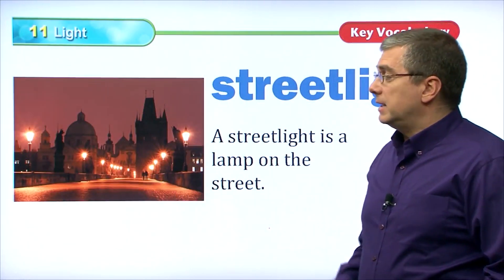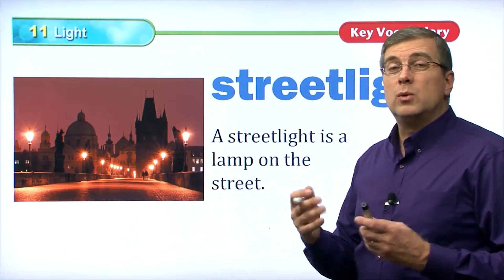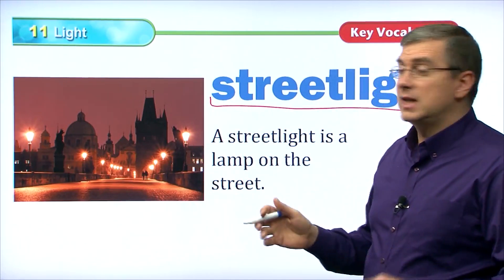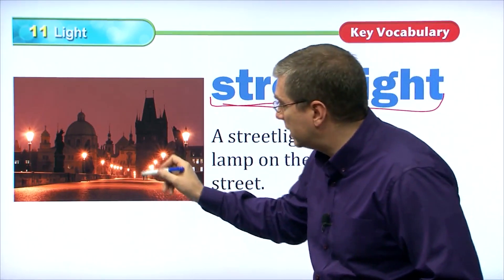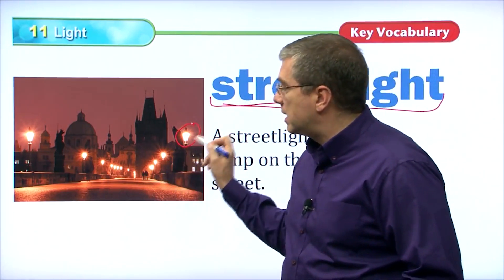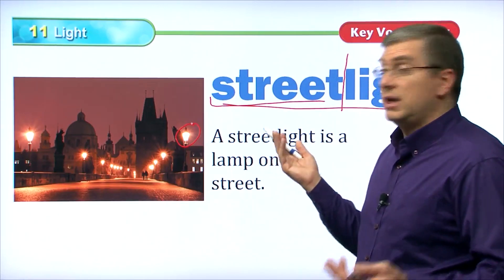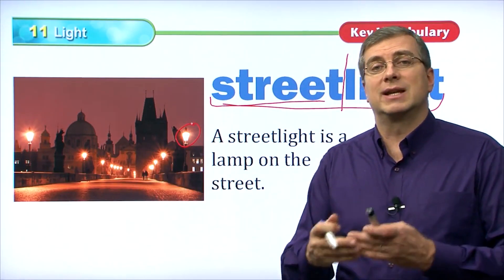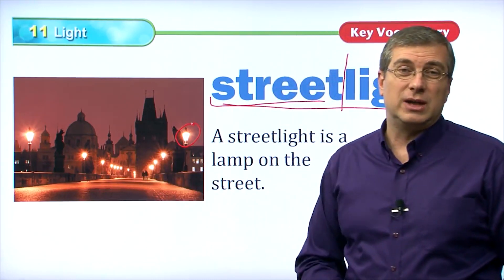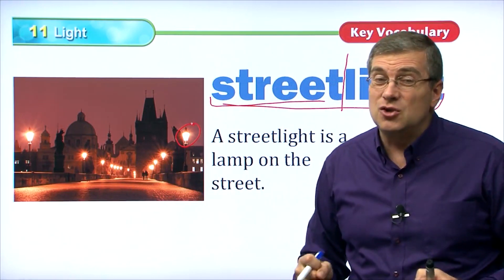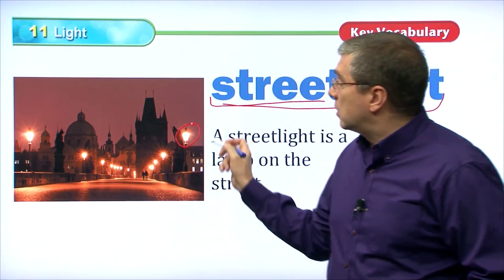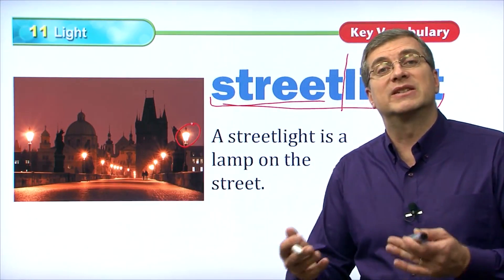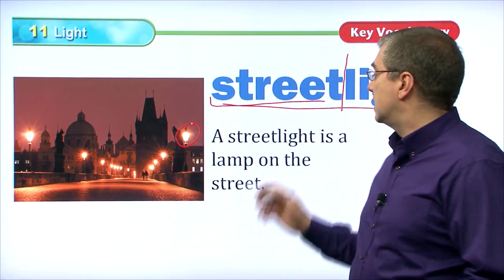At night, it's very dark. The sun is gone, there's no sun, so we need light to see by. Many cities will put street lights in their cities. Street light, of course, is two words — street and light. Street lights are lamps on the street. There are lamps on the street that allow us to see the city streets at night. It's dangerous to drive if you can't see and there's no light. So cities put lamps on the side of the streets so that drivers and people who are walking can see and be safe. Street lights make cities safe.